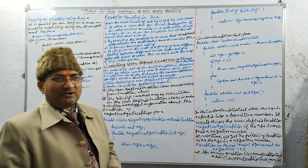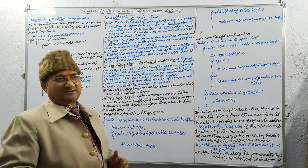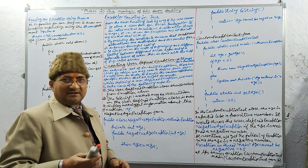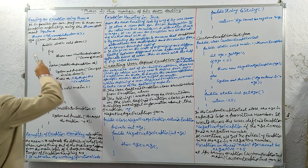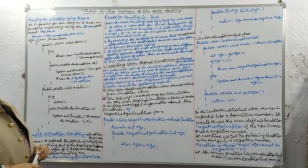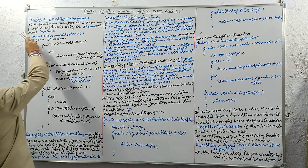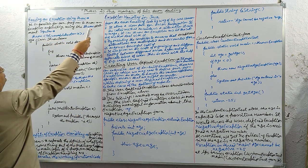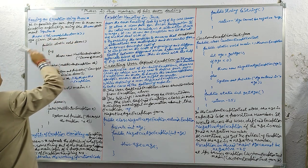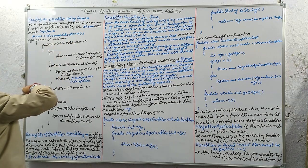Throw. How can we force an exception? How can we create an exception and explicitly throw it? This is an example. What is forcing an exception using throw? It is possible for our program to throw an exception explicitly using the throw statement. Throw takes a throwable instance.